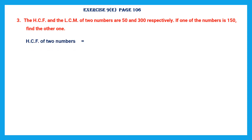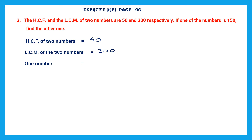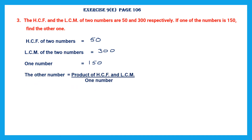So what's given to us? HCF of two numbers is 50, LCM of the two numbers is 300, and one number is 150. To find the other number, we have to use this formula: the product of HCF and LCM divided by the one number that's given to us.